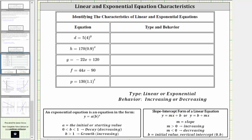Now let's talk about the behavior being increasing or decreasing. For an exponential equation, if the base b is between zero and one, we have exponential decay, and we say the behavior is decreasing. If the base b is greater than one, we have exponential growth, and the behavior is increasing.